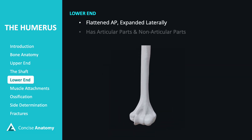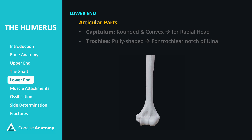The lower end of the humerus is flattened in the anteroposterior direction and expanded laterally. It includes both articular parts for joint surfaces and non-articular parts for ligament and muscle attachments. The articular parts consist of the capitulum, which is rounded and convex to articulate with the radial head, and the trochlea, which is pulley-shaped to fit with the trochlear notch of the ulna.